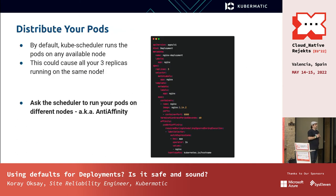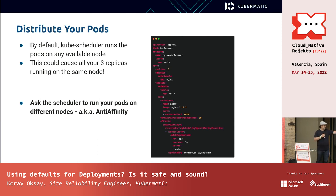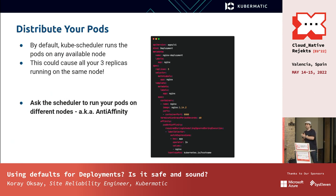I would definitely suggest distributing your pods. Of course you will have more than one replica, but running two or three replicas on the same node is not a good idea for reliability. Defining an anti-affinity rule asks the scheduler to schedule your pods on different nodes, which is a good practice.